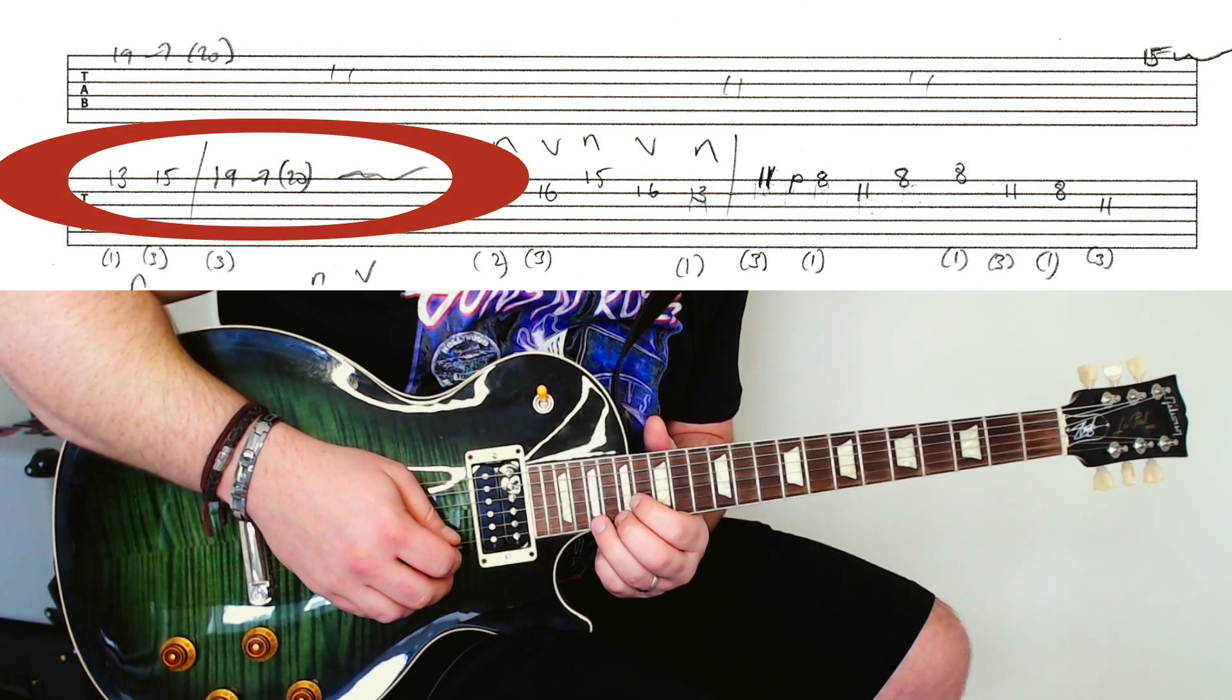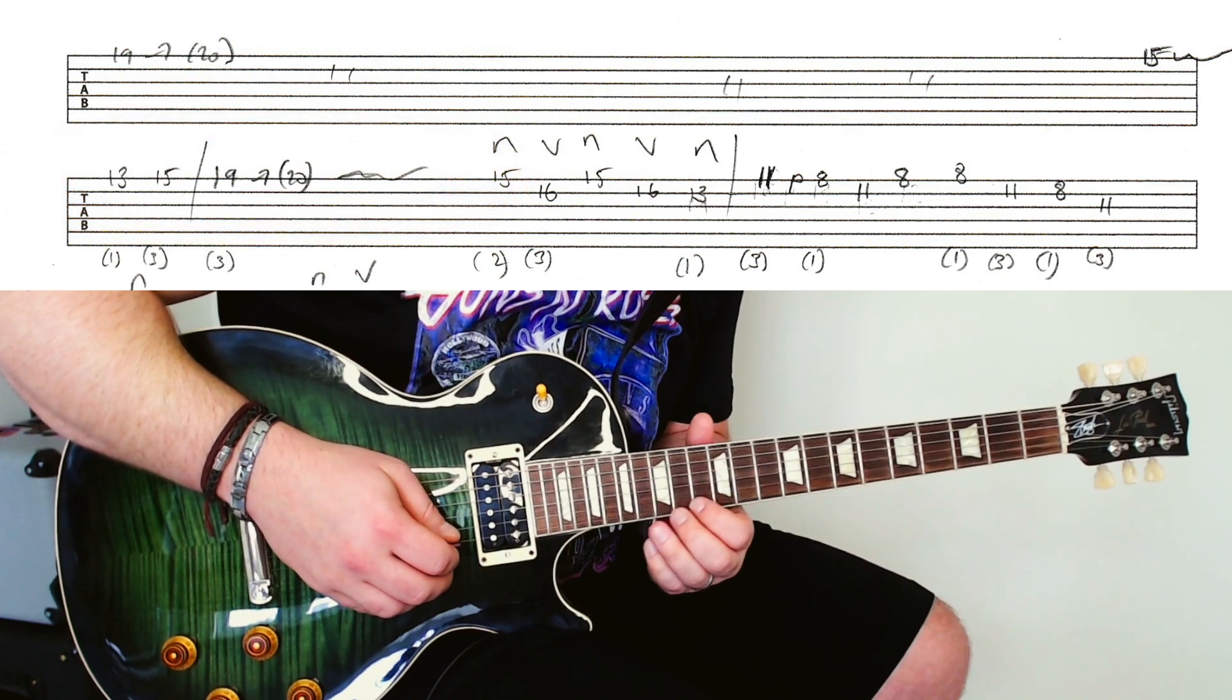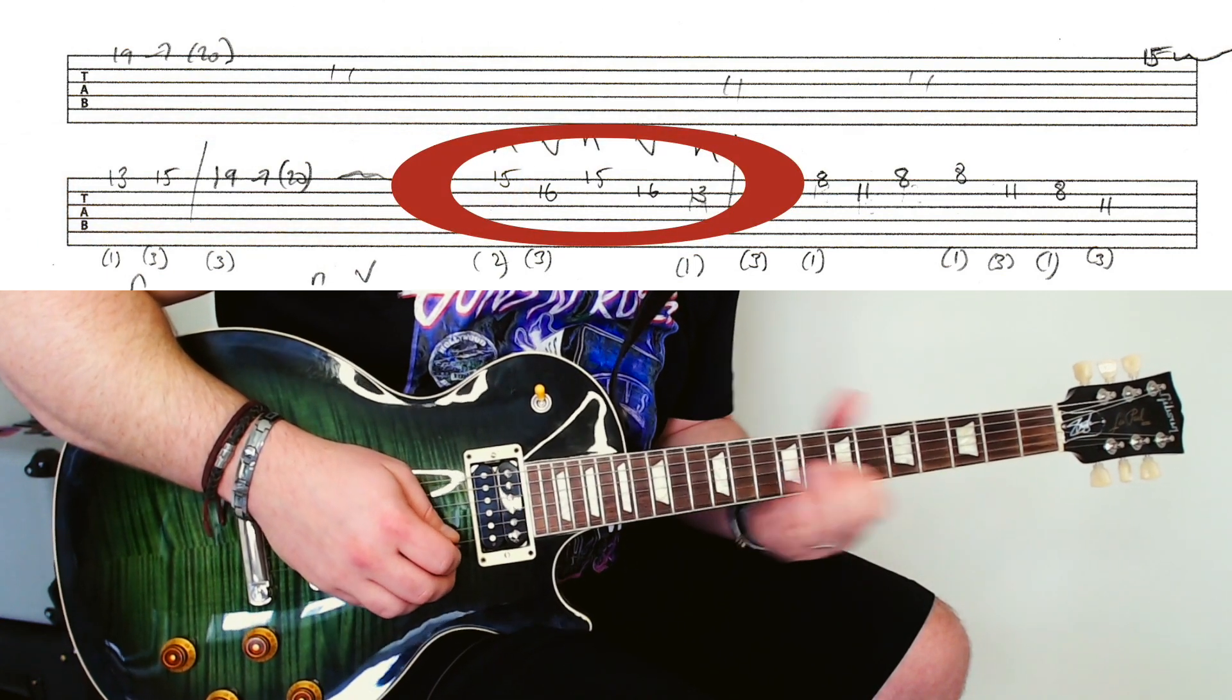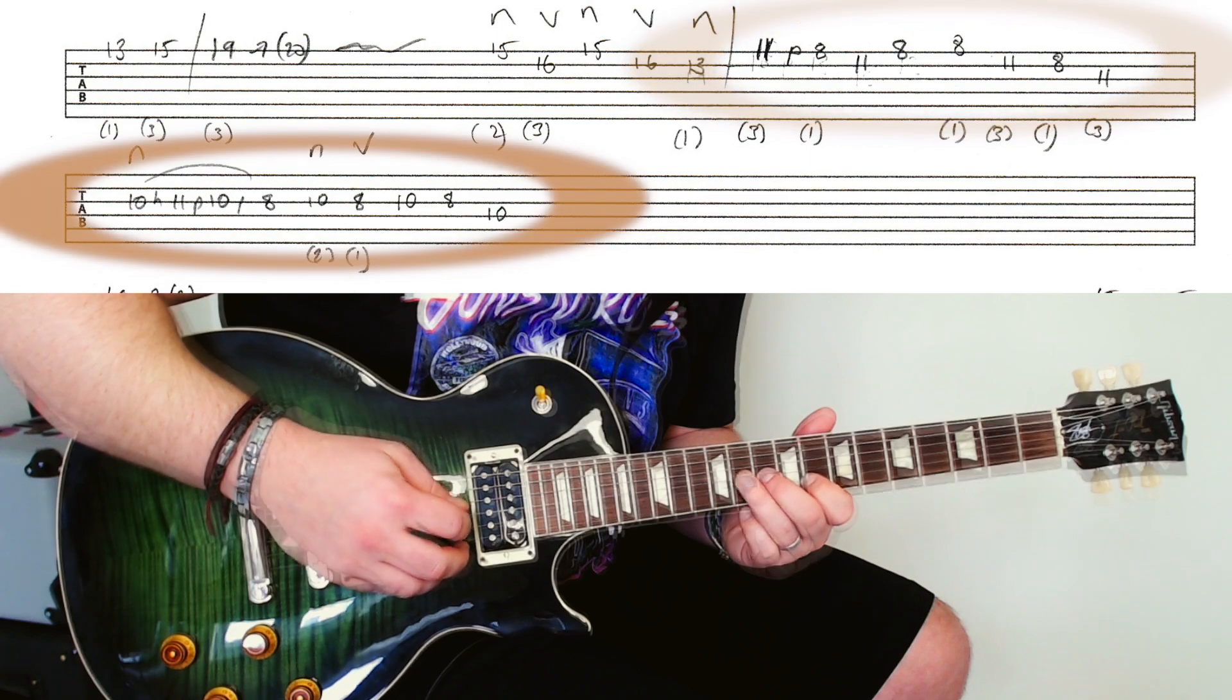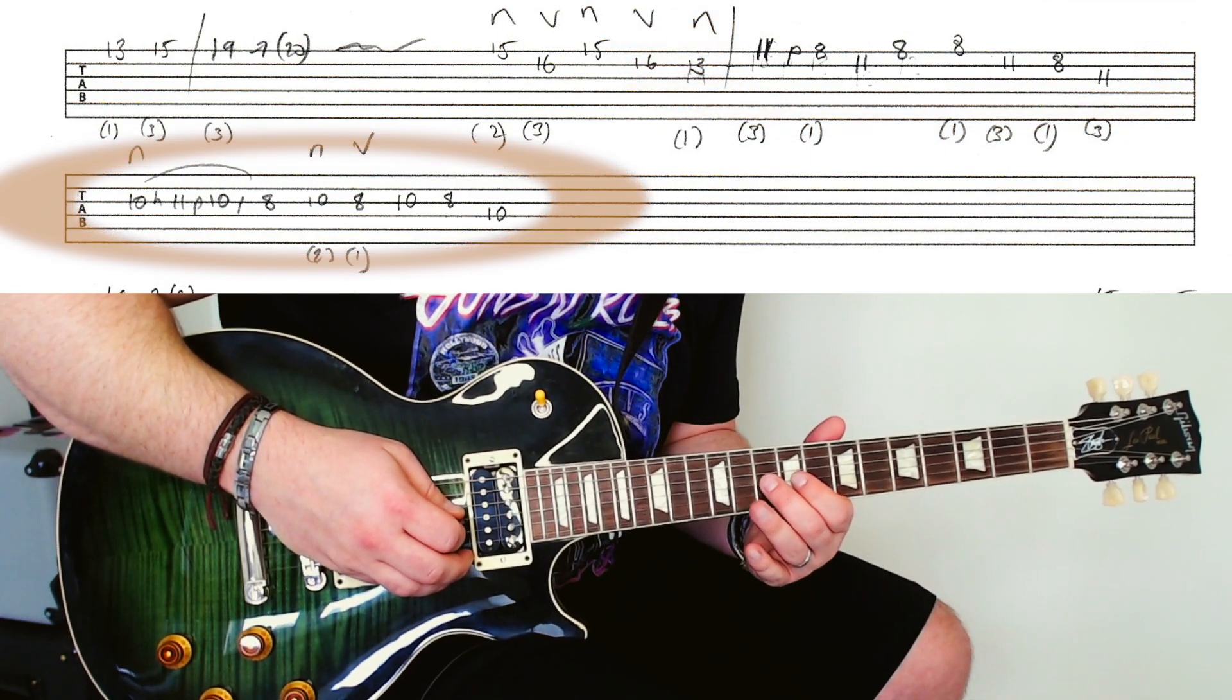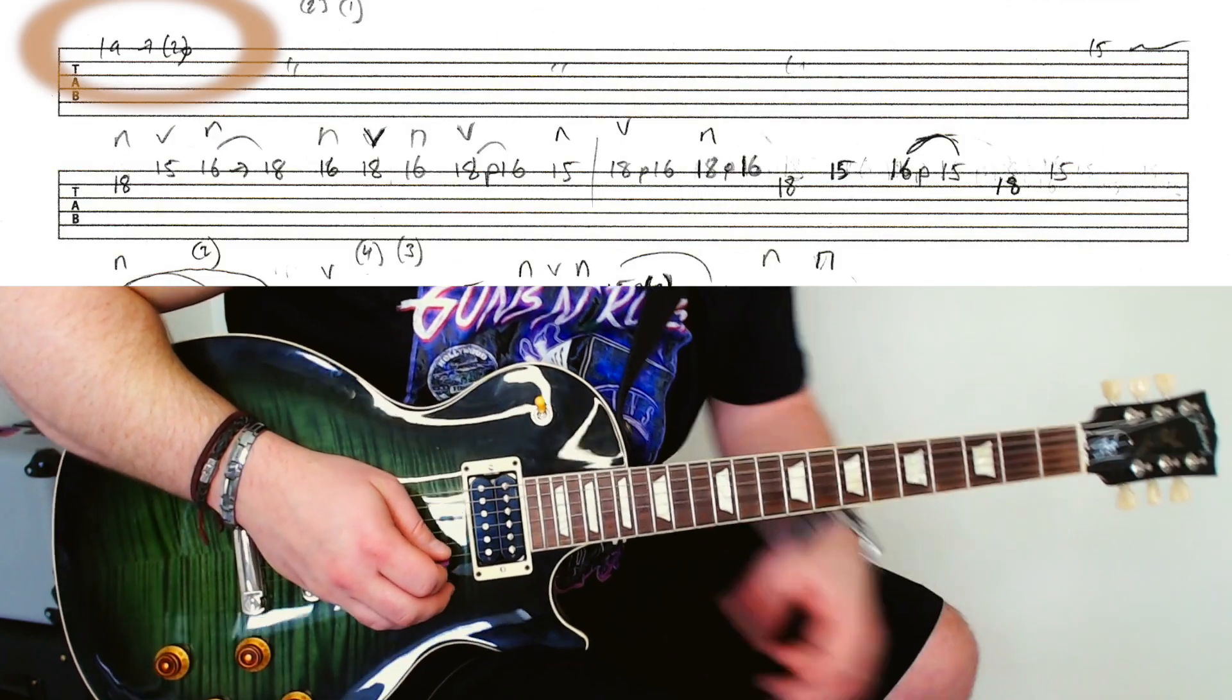So you jump up to the 19th and then you do this little bend here. And then it goes to this nice shape here. And then you can jump down to this 11th here. And you can keep that second finger being used as well for that shape. Then we're up again with the repeats of this high section.